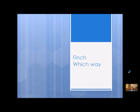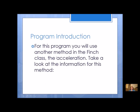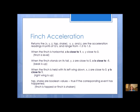In our Finch robot program so far you've used most of the methods for the Finch robot, but there's one we haven't used yet and that's acceleration. It uses the gyroscope in the Finch robot that lets you know how the Finch robot is oriented. We're going to use the acceleration method in this program — we're going to call it Finch Which Way. The acceleration method is going to return five different values.